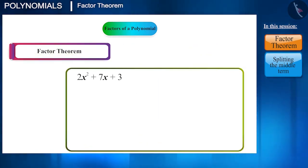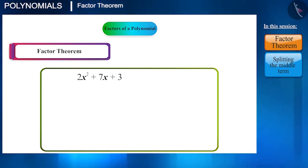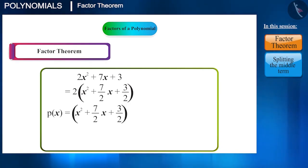First, let's see the factorization method. The polynomial is 2x² plus 7x plus 3. To solve using this method, the coefficient of x² has to be 1. So we can take 2 common out of it and write it like this: 2(x² plus 7/2x plus 3/2). Now, if we write x² plus 7/2x plus 3/2 equal to p(x), then this will become 2p(x).